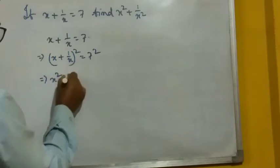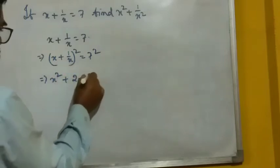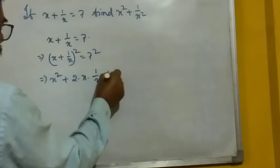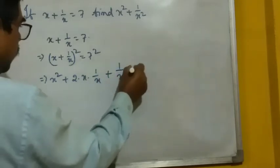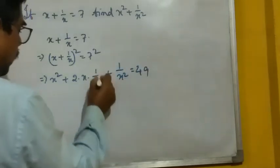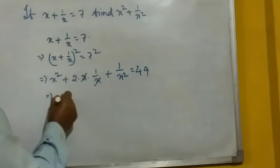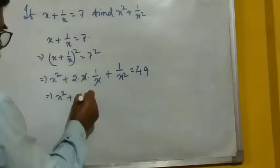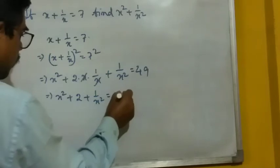So it will be x square plus 2 into x into 1 by x, a, b, twice a b plus b square equal to 49. x cancel. So it will be x square plus 2 plus 1 by x square equal to 49.